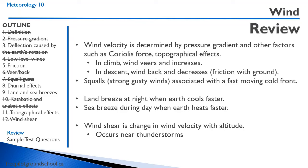Wind velocity is determined by the pressure gradient and other factors such as Coriolis force and topographical effects. In a climb, the wind tends to veer and increase in speed; in a descent, it tends to back and decrease due to friction with the ground. Squall lines with strong gusty winds are associated with fast-moving cold fronts. Land breezes occur at night when the earth cools faster; sea breezes occur during the day when the earth heats up faster. Wind shear is a change of wind velocity with altitude and occurs near thunderstorms.